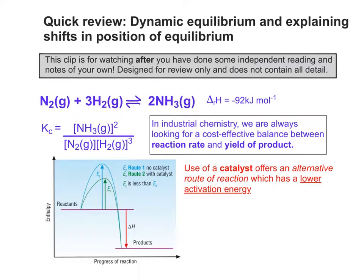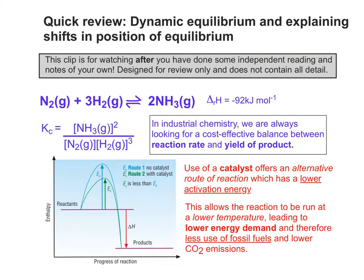If we use a catalyst, this offers an alternative route of reaction which has a lower activation energy. This gives a distinct advantage for the industrial chemist, because it allows the reaction to be run at a lower temperature, leading to lower energy demand and therefore less use of fossil fuels and lower CO2 emissions. Not only is this an environmental advantage, it's also an economic one because it's more cost effective.